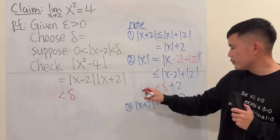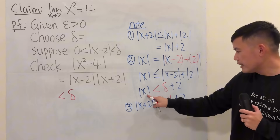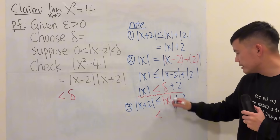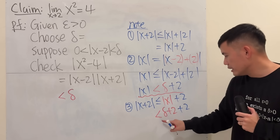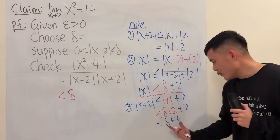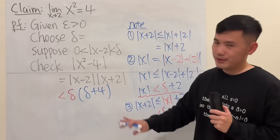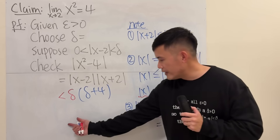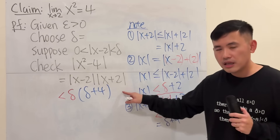Combining notes 1 and 2: absolute value of x plus 2 is less than or equal to absolute value of x plus 2. Since absolute value of x is less than delta plus 2, we get absolute value of x plus 2 is less than delta plus 2 plus 2, which equals delta plus 4. We can now substitute this bound in: the product becomes less than delta times delta plus 4. How do we proceed? We set delta times delta plus 4 equal to epsilon and solve for delta.